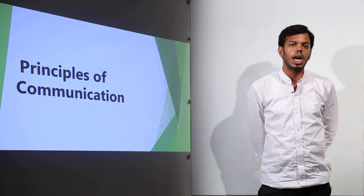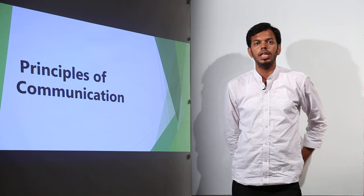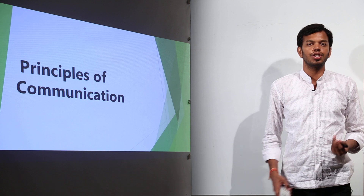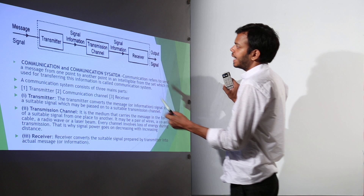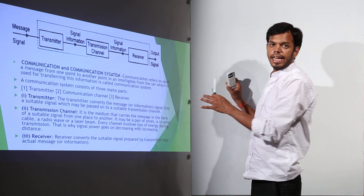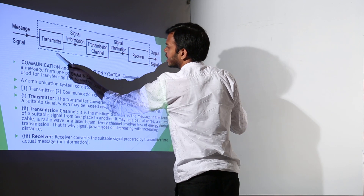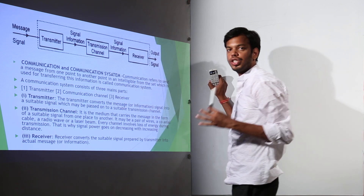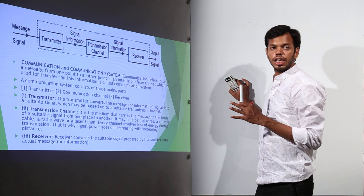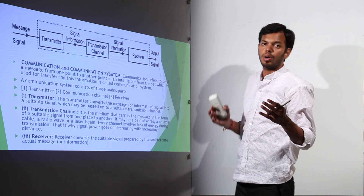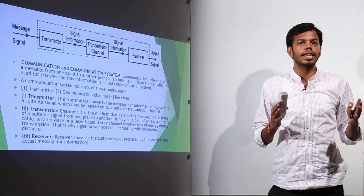Hello students, today we are going to start studying the principle of communication in more detail. Till this point I have given you only bits and parts of what a communication system is. Looking at this block diagram, here is a message signal which is to be sent to a receiver. The processes involved are: first a transmitter, then the signal is sent through a transmission channel, and then it is received by a receiver. This is what a communication system is — a process of sending a message signal from a transmitter to a receiver.